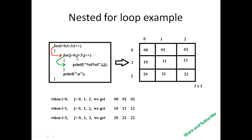For j equal to 0, 1, 2 — when i equals 0, the condition 0 less than 3 is true. It goes to the inner loop and we get j equal to 0, 1, 2. When j equals 3, the condition is false, it exits the loop, and we get the output: 0 0, 0 1, 0 2.